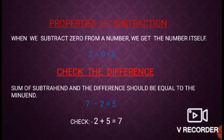Properties of subtraction. When we subtract 0 from a number, we get the number itself. For example, 2 minus 0 equals 2.